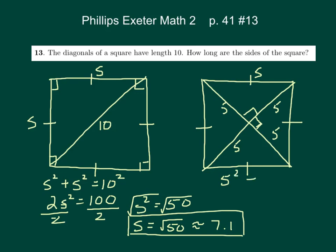5² + 5² = S². When we work that out, we still get S² = 50.